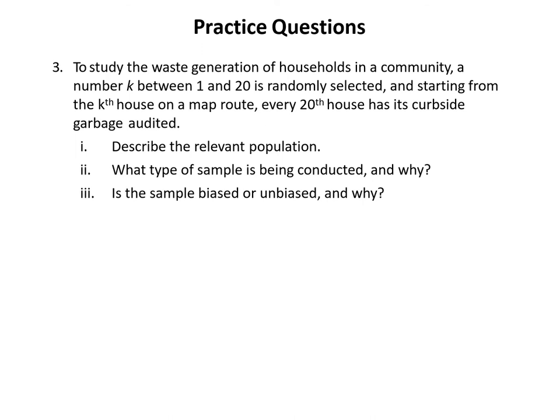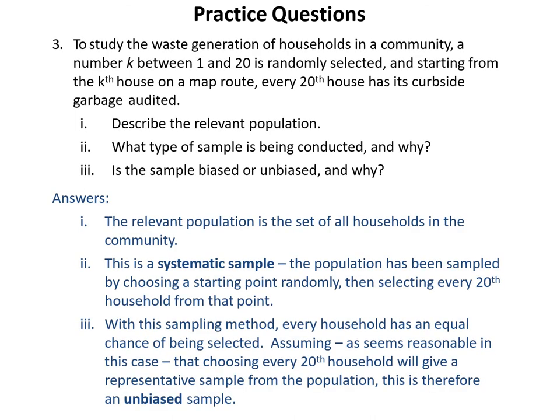In Question Three, to study the waste generation of households in a community, a number k between 1 and 20 is randomly selected and starting from the kth house on a map route, every 20th house has its curbside garbage audited. The relevant population is the set of all households in this community. This is a systematic sample because the population has been sampled by choosing a starting point randomly and then selecting every 20th household from that point. Every household has an equal chance of being selected, making this an unbiased sample.